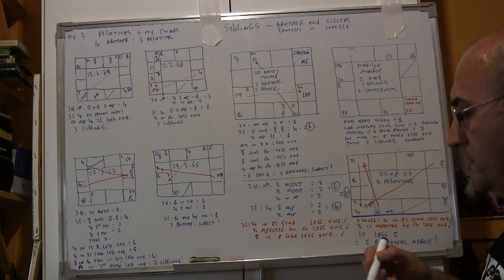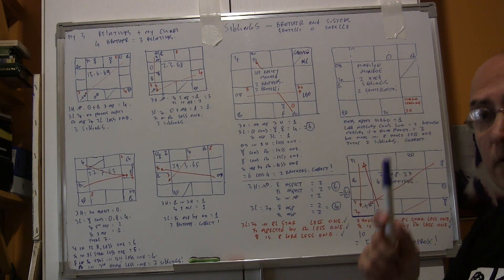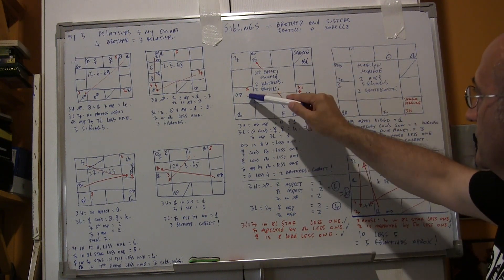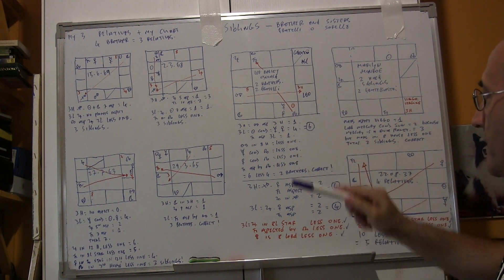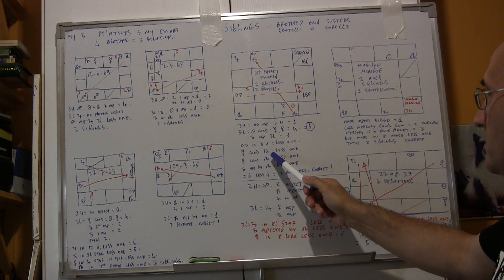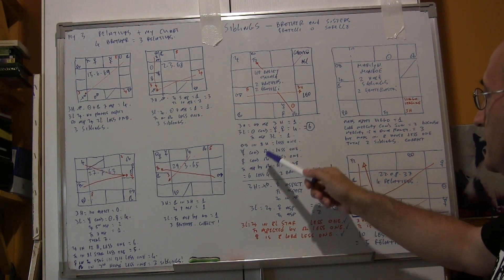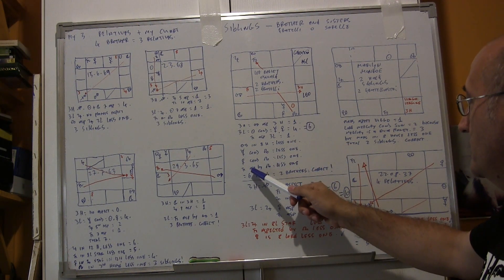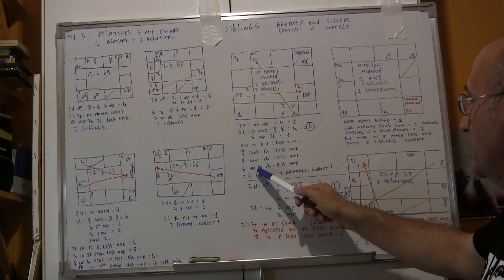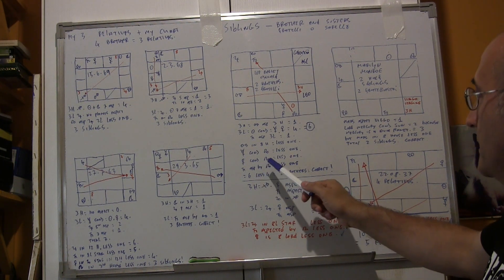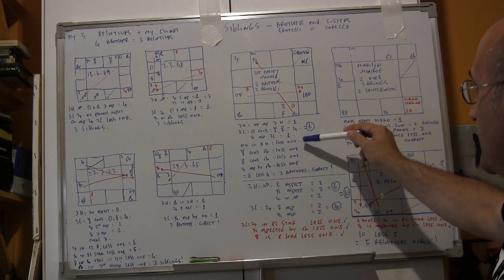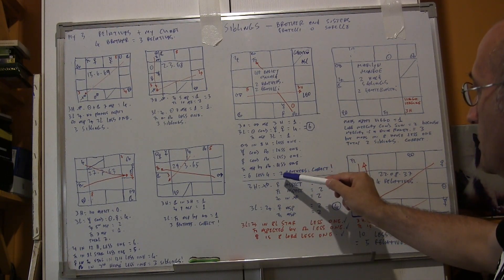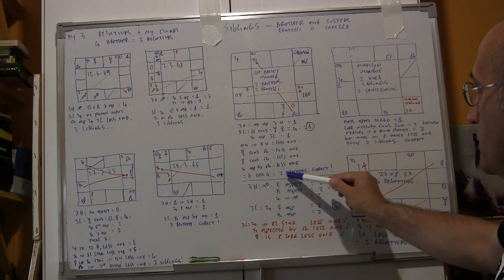Now let's see if there is any reduction. Mars is in the eighth house, so less one. Mercury conjoins Rahu, less one. Venus conjoins Rahu, less one. Saturn is aspected by Rahu, less one. So six less four equals two. The total is two brothers — correct.